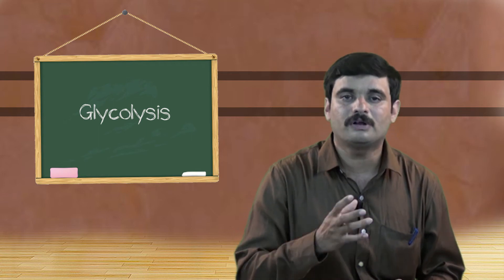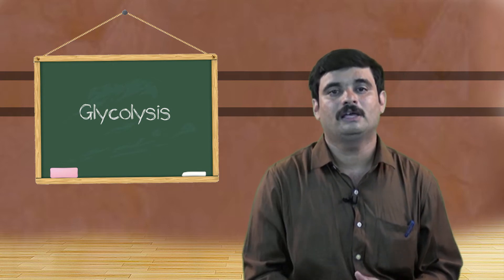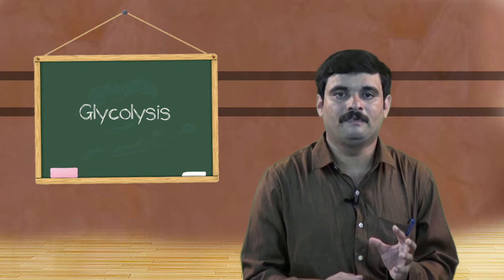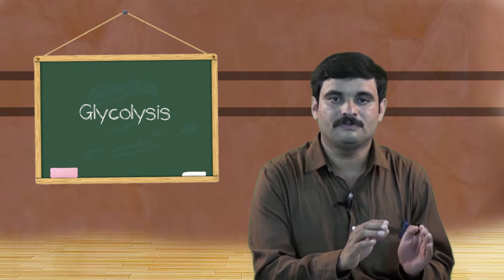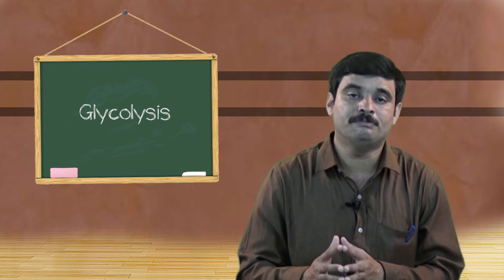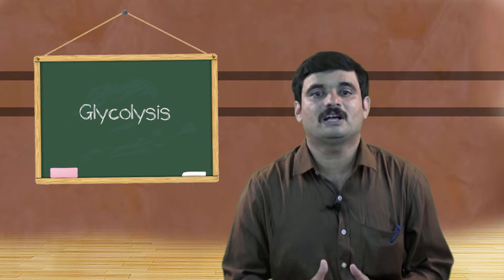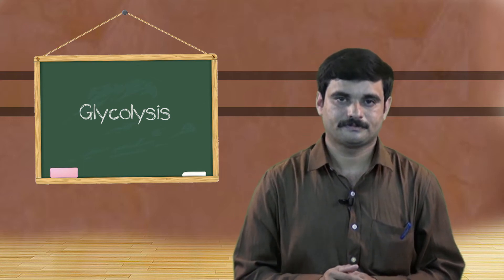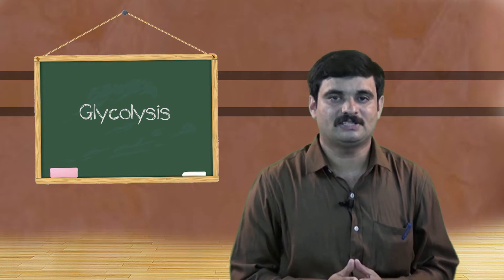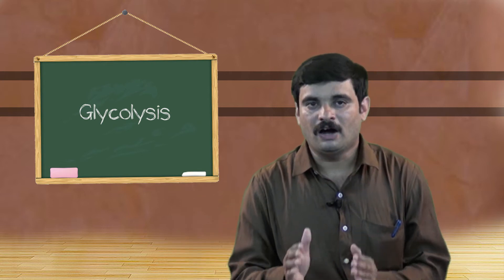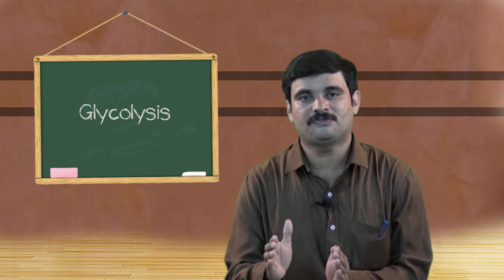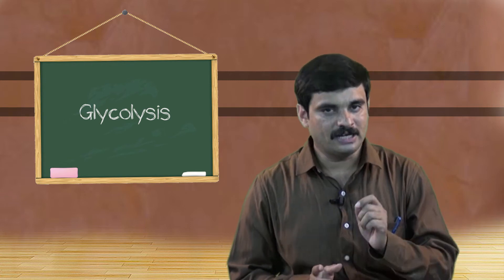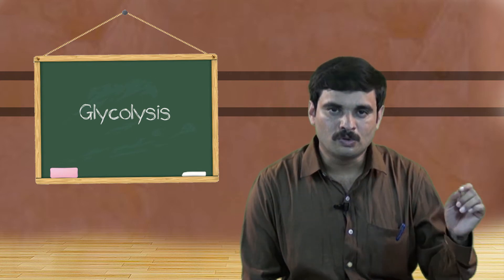The third reaction involves the addition of one more ATP into the glycolytic pathway. ATP is added to fructose 6-phosphate at position number 1, producing fructose 1,6-bisphosphate. This reaction is mediated by phosphofructokinase, and ADP is released.